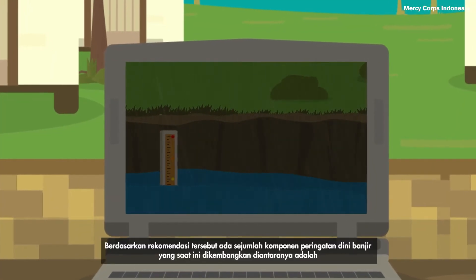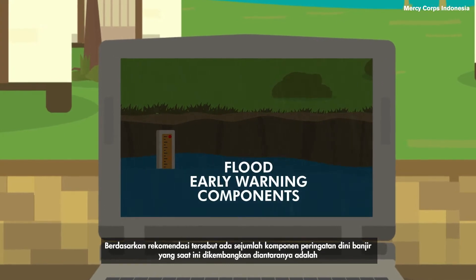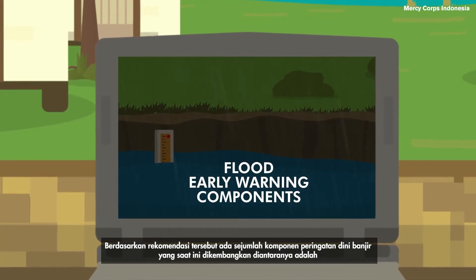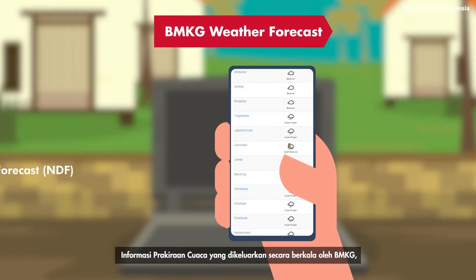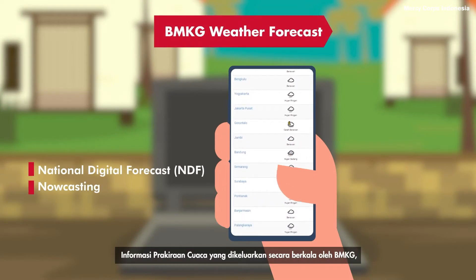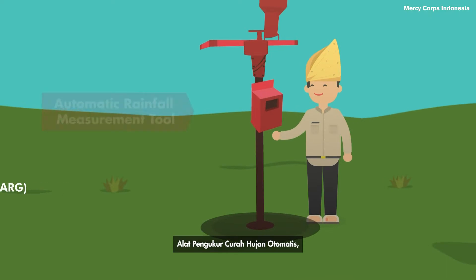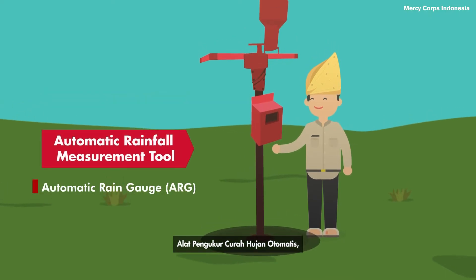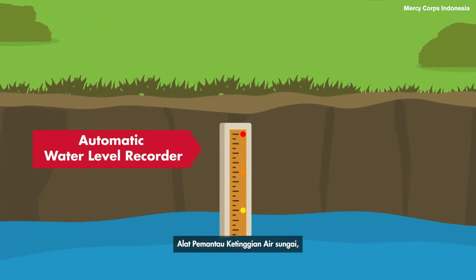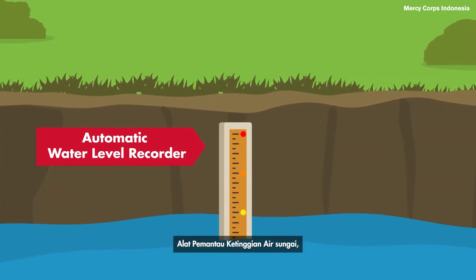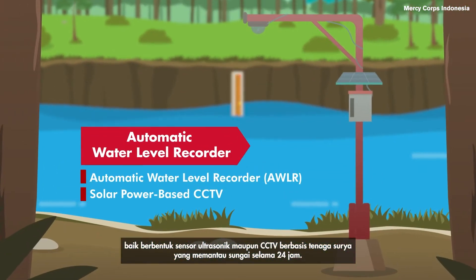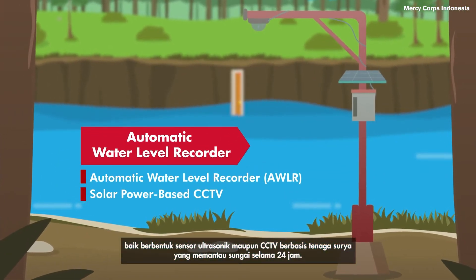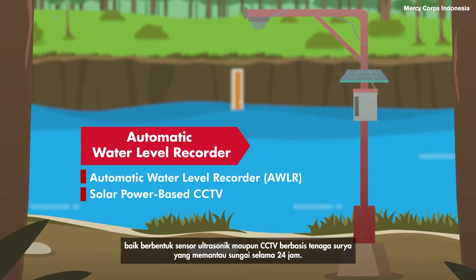Based on the recommendation, there are flood early warning components that are currently developed. They are weather forecast information issued regularly by BMKG, an automatic rainfall measurement tool, a river water level monitoring tool — either in the form of an ultrasonic sensor or solar power-based CCTV — which monitors the river for 24 hours.